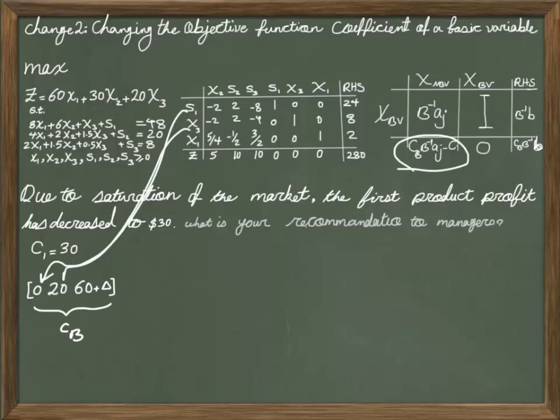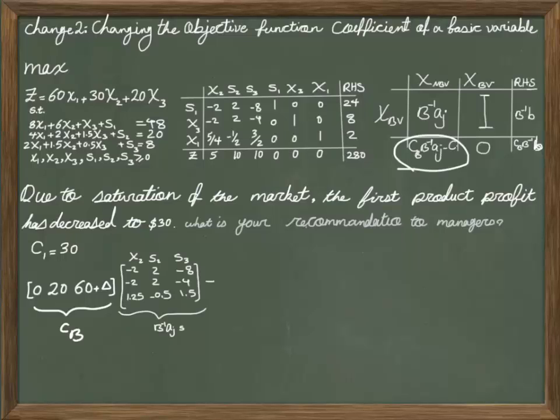X3 coefficient is 20, and X1 coefficient is 60, but instead of 60, I put 60 plus delta. So that's the vector of Cb. I multiply Cb by B inverse Aj.